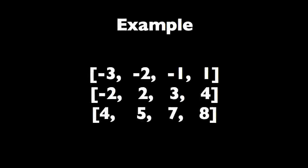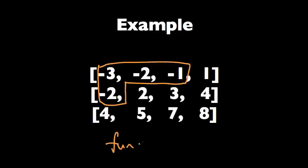So here's an example. As you can see, the numbers in the matrix are sorted row-wise and column-wise. Here we have four negative numbers. So our function, let's say func, should return four in this case.